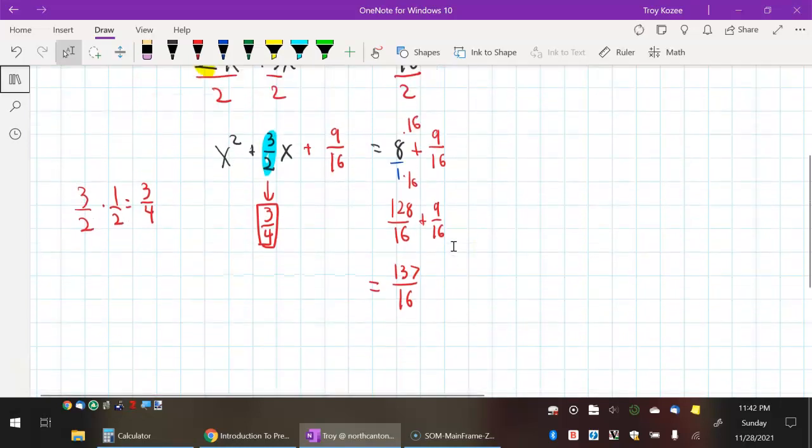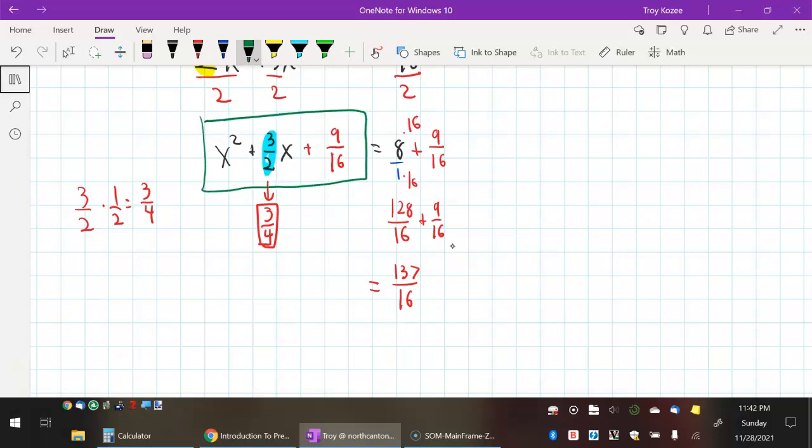Now, my left side, remember that the whole point of completing the square is that this is a perfect square trinomial. It factors real sweet. It factors as x plus a number squared. And that number happens to be half of my middle term, half of my x term, which is 3/4.